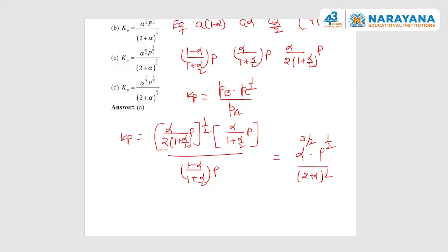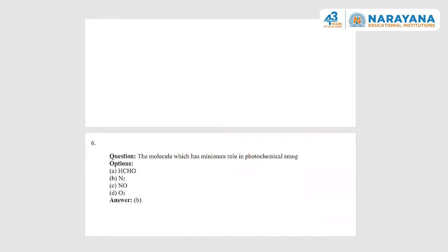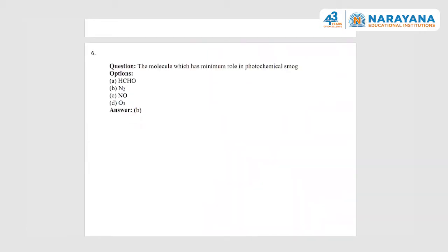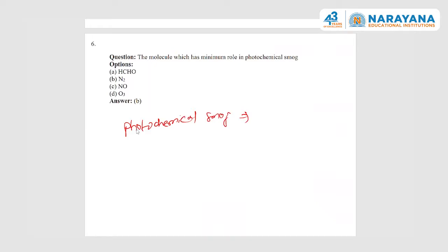Next question: which molecule has minimum role in photochemical smog? Photochemical smog mainly consists of ozone, nitric oxide, and PAN — these are the main constituents. Formaldehyde is there, NO is there, and ozone — all three are related to photochemical smog. Nitrogen (N₂) has nothing to do with photochemical smog. So the molecule which has minimum role in photochemical smog is nitrogen, and the answer is N₂.